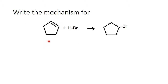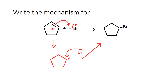What is the mechanism for the formation of this bromide from this alkene? The first step is the alkene reaches out and grabs a proton off the hydrogen bromide. Then the electrons in the hydrogen bromide bond jump onto the bromine. The bromine then dives into the carbocation that forms and we get this bromide.